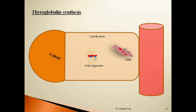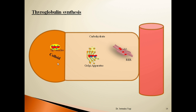The peptide-carbohydrate combination finally forms the thyroglobulin molecule. This thyroglobulin molecule is secreted from the Golgi apparatus inside a vesicle. The vesicle travels toward the apical membrane of the thyroid follicular cell and finally enters into the colloid substance of the thyroid lumen. This is how the thyroglobulin molecule is synthesized on the rough endoplasmic reticulum and Golgi apparatus and finally secreted to the colloid.